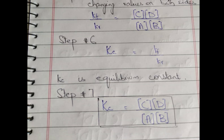So Kc is the equilibrium constant. In step number seven, Kc — which is one constant — is equal to the molar concentration of C times molar concentration of D, over molar concentration of A times molar concentration of B. So the Law of Mass Action describes the relationship between reactants and products and the rate of reaction. The Law of Mass Action is very important and you should practice it very well.